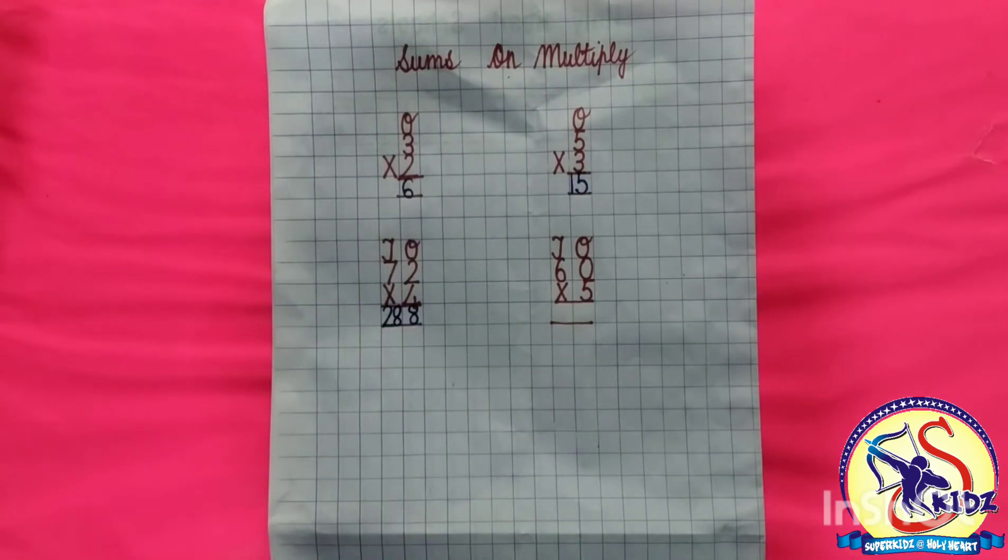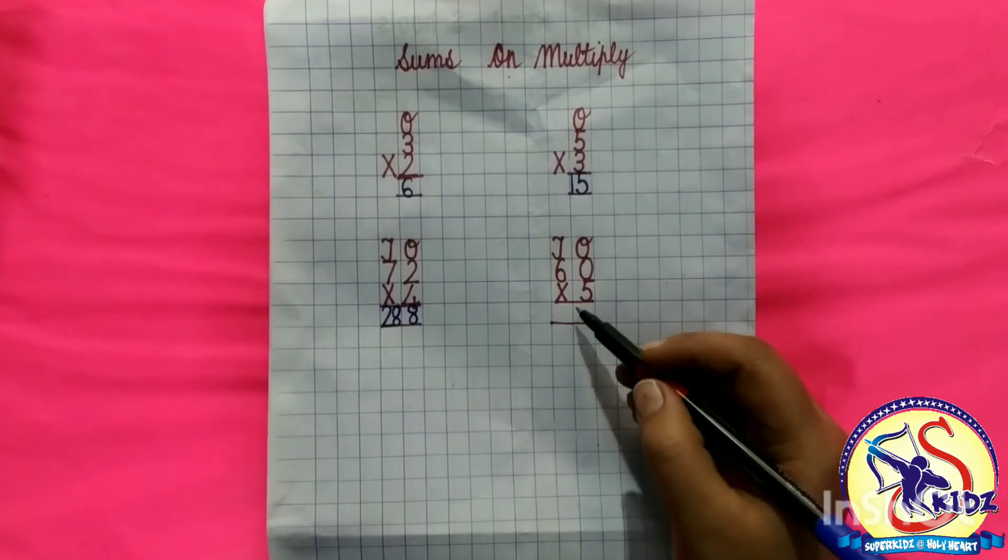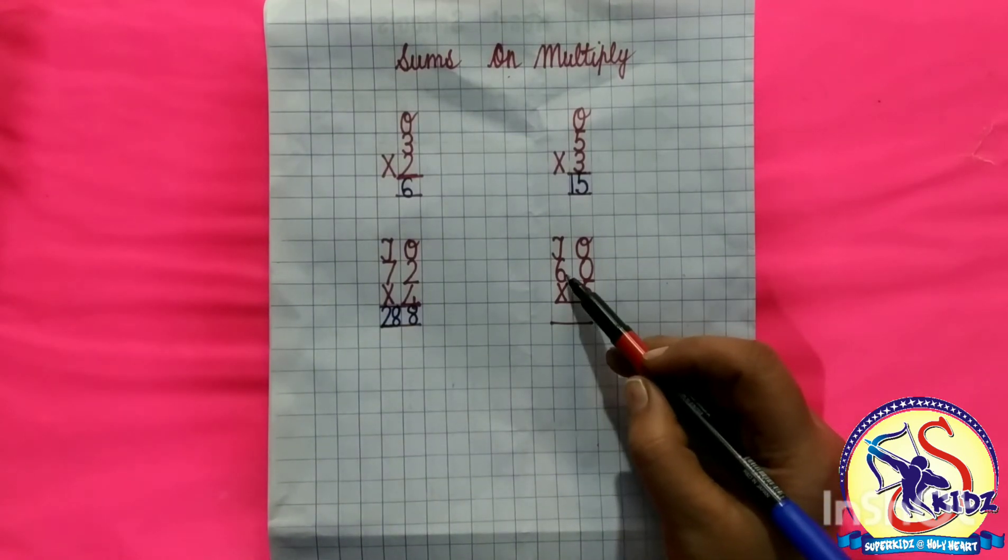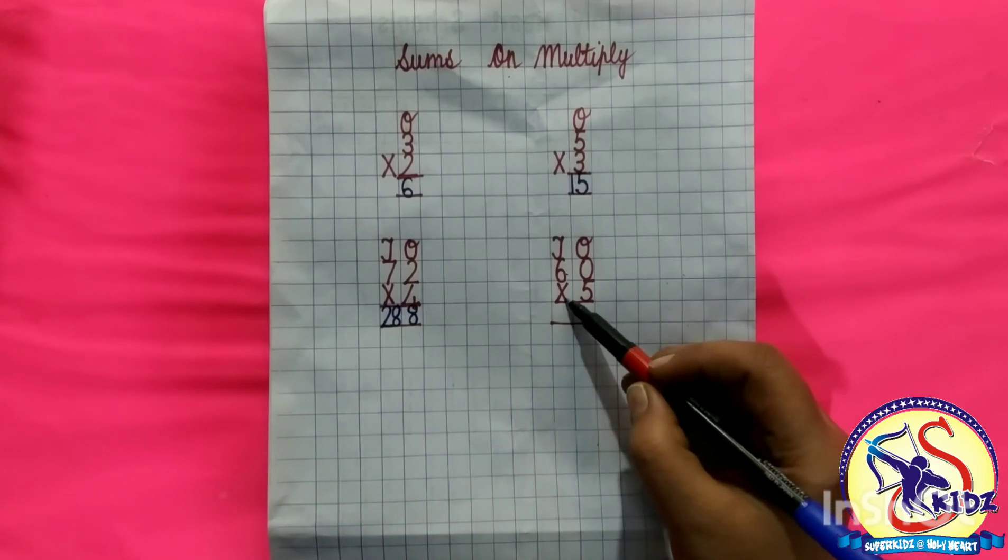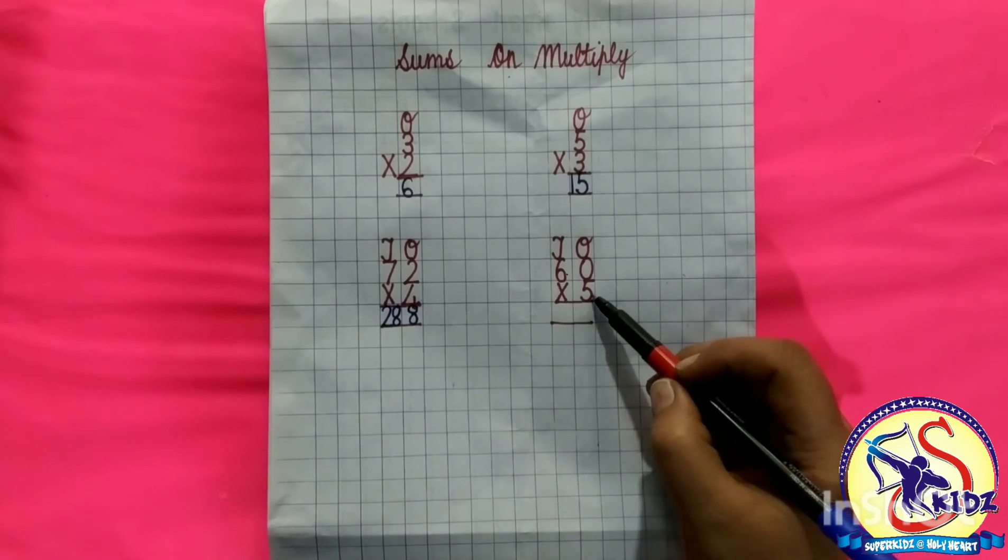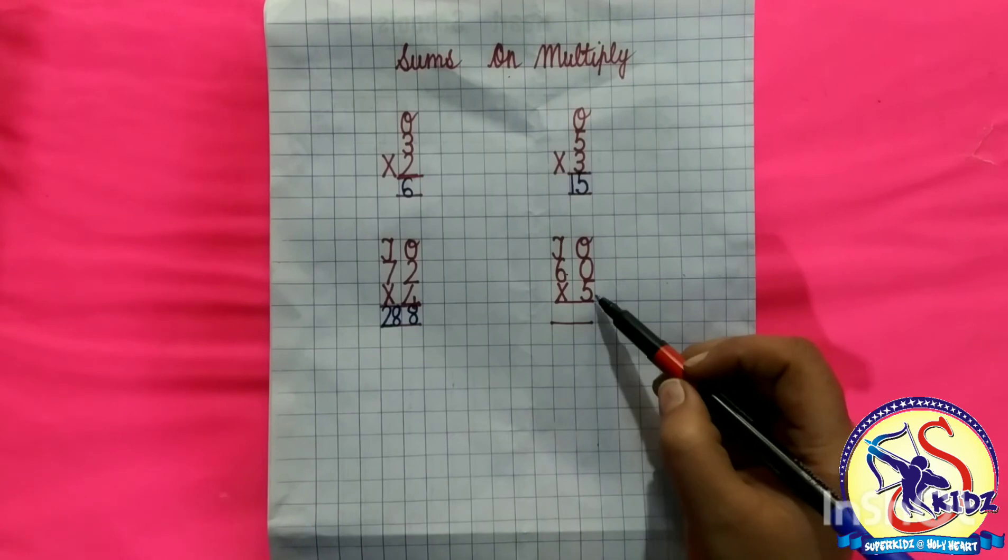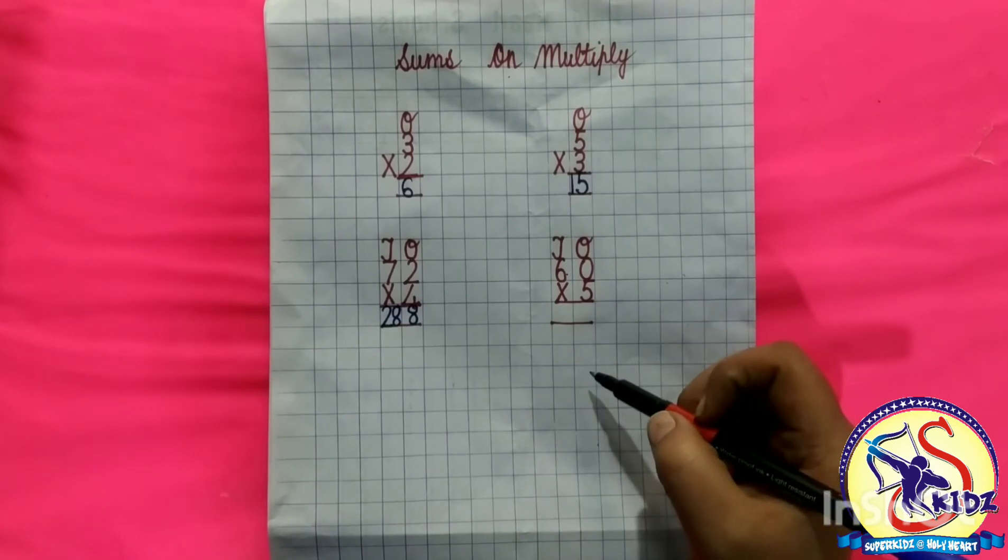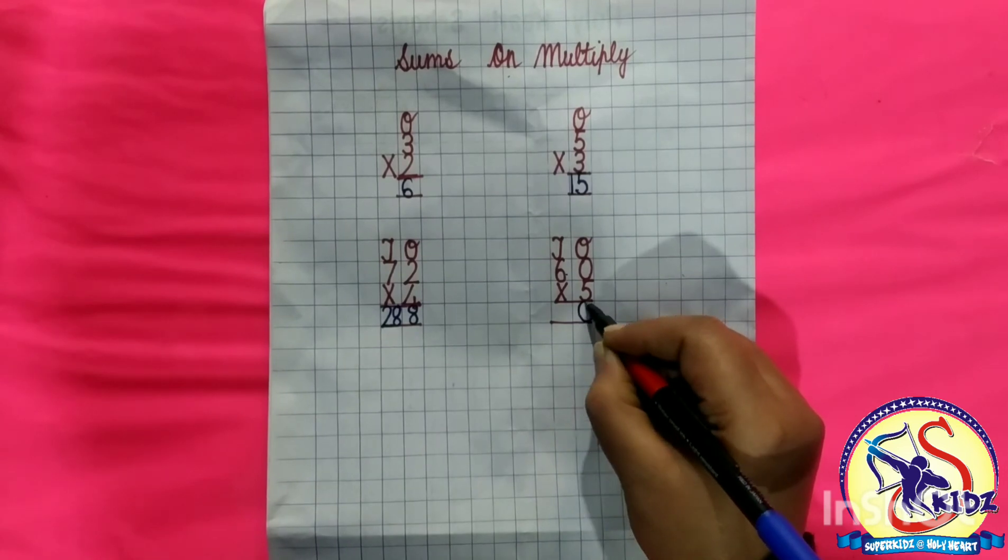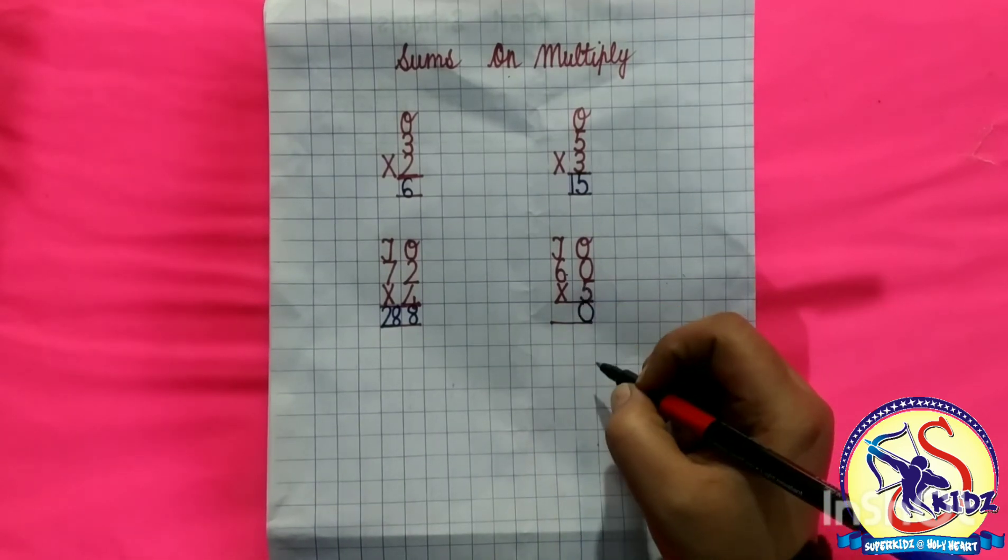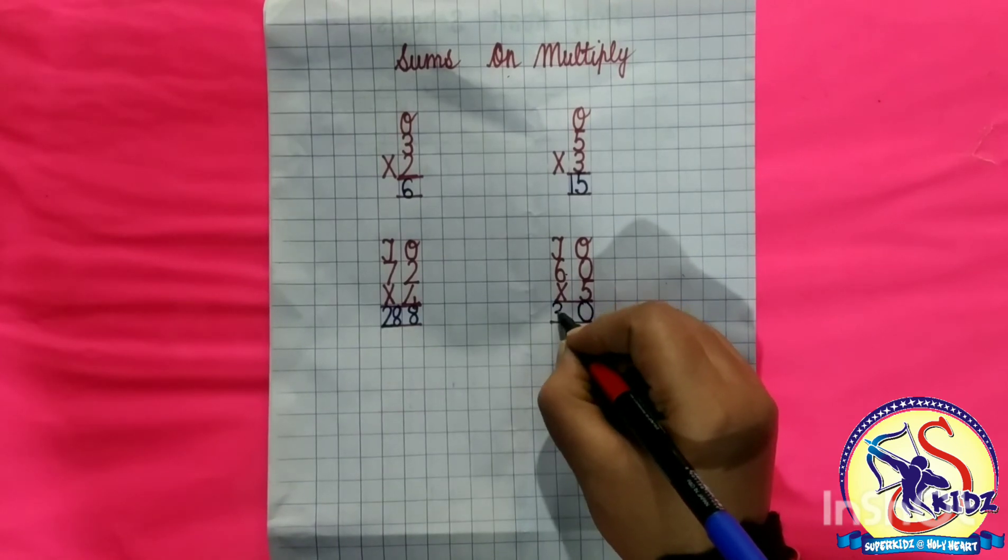Now come to next sum. Here we have taken two numbers, 60, with sign of multiply. Which number is written here? Number 5. So we will speak table of 5. 5 into 0 equals to 0. So answer is 0. 5 into 6 equals to 30. So answer is 30.